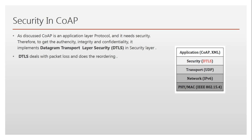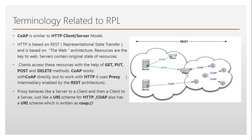Regarding reliability, packet loss, reordering, authenticity, integrity, and confidentiality — UDP makes use of DTLS, which is Datagram Transport Layer Security. On the other hand, if TCP is being used, then TLS is used for security. This is how CoAP deals with the security part, by using DTLS over UDP.